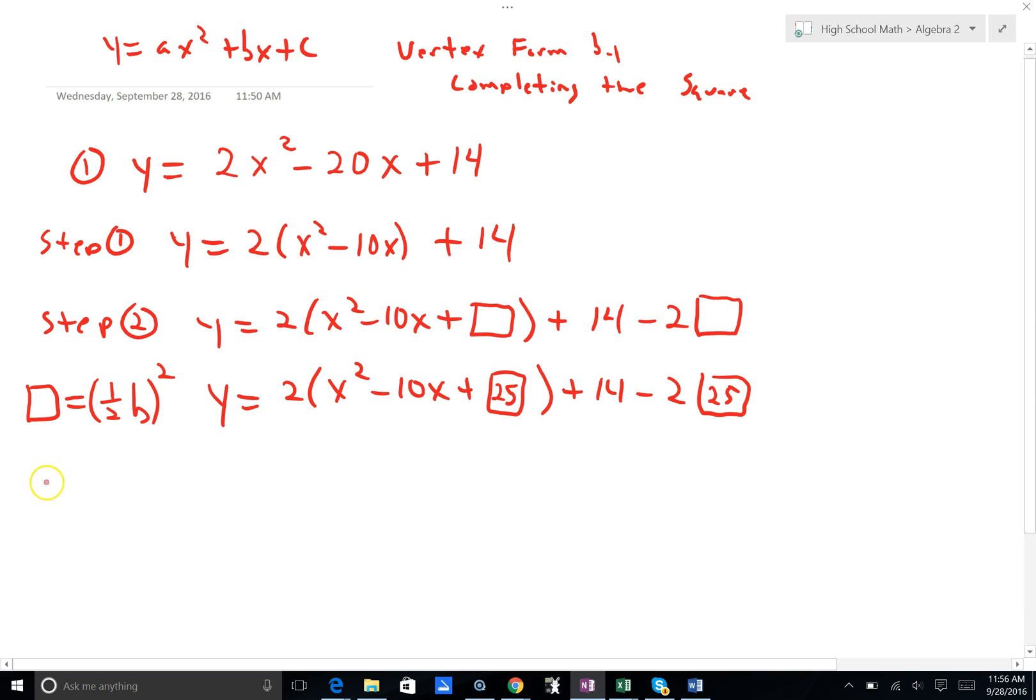Step 3 is factoring. That is, we're going to write this trinomial, this 3-term trinomial, as a binomial squared. So 2 stays the same, and outside I'm going to just simplify this. This is 14 minus 50, and 14 minus 50 I believe would be minus 36. Now I'm writing this trinomial as one binomial quantity squared.